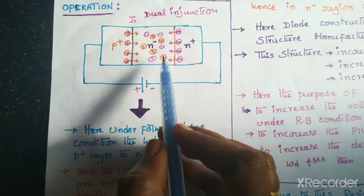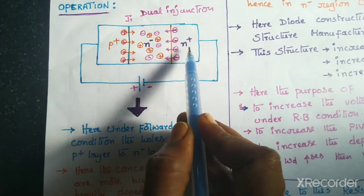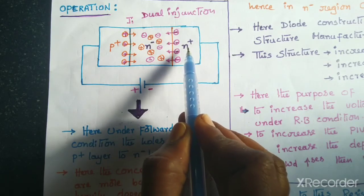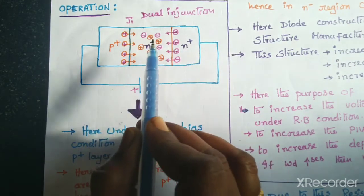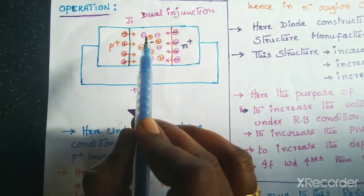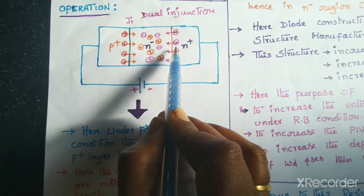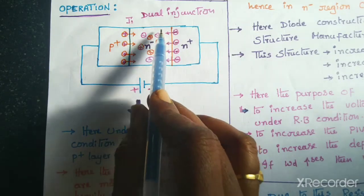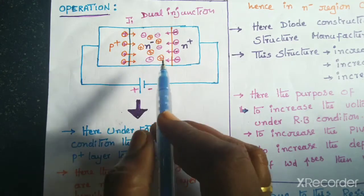So that is the importance of the N minus layer, along with the two heavily doped regions: P plus and N plus. The N minus region is used to increase the voltage level, but the N plus layer is useful during conduction — for taking the recombination with holes in the N minus layer. The electrons from N plus recombine with holes in the N minus layer, causing the resistance to decrease and the diode to conduct.